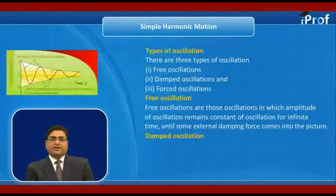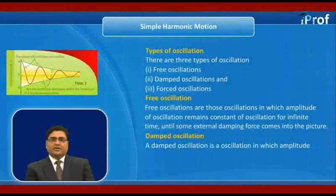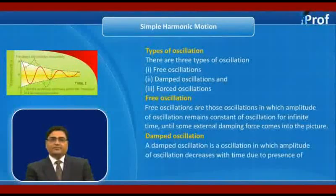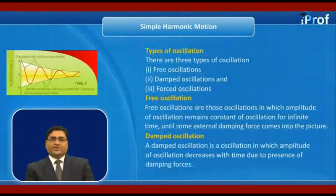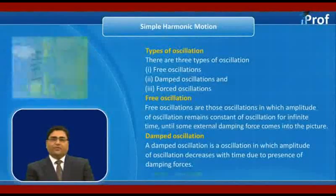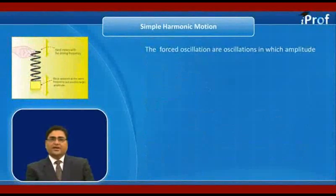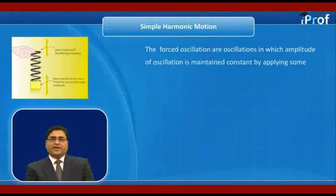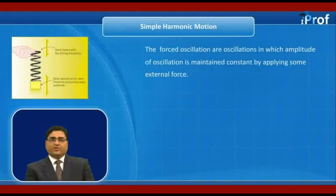A damped oscillation is an oscillation in which the amplitude of oscillation decreases over time due to the presence of damping forces. Forced oscillations are oscillations in which the amplitude is maintained constant by applying some external force. Forced oscillations work like free oscillations, but an external force remains present.